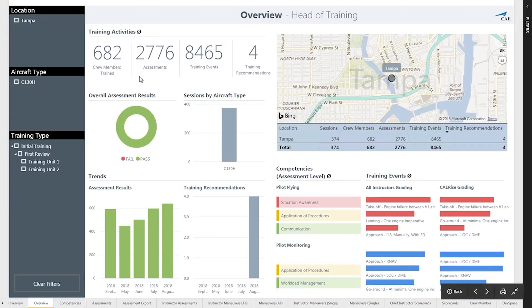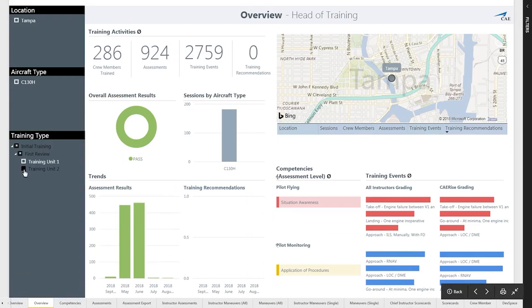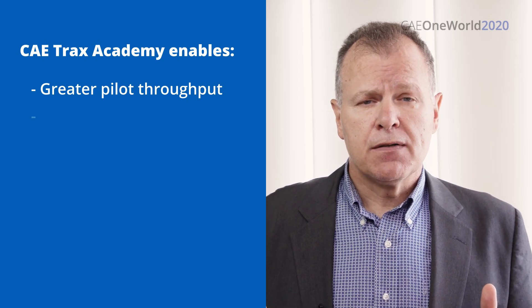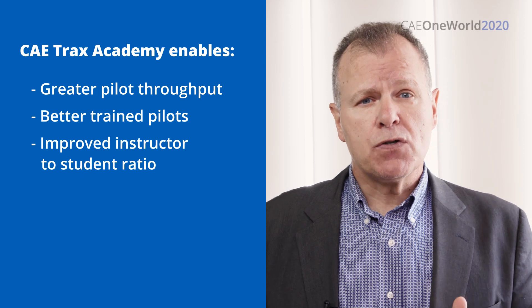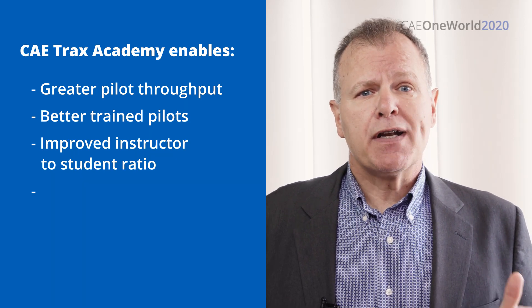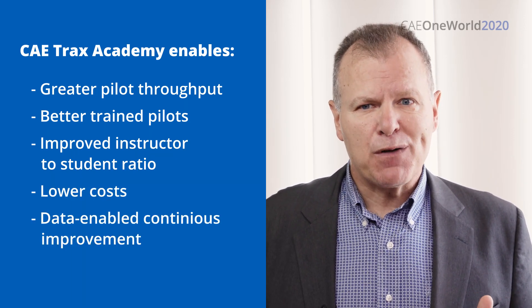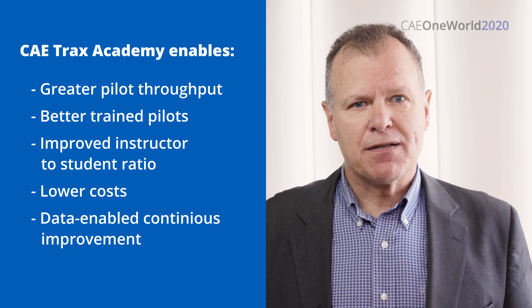For the organization, TRAX provides objective, data-driven aggregate summaries signaling potential areas for improvement in the syllabus, early identification of problems, and reduced overall student attrition. This all leads to greater pilot throughput, better trained pilots, more efficient instructor-to-student ratios, lower training costs, and a data-grounded foundation for training improvement.